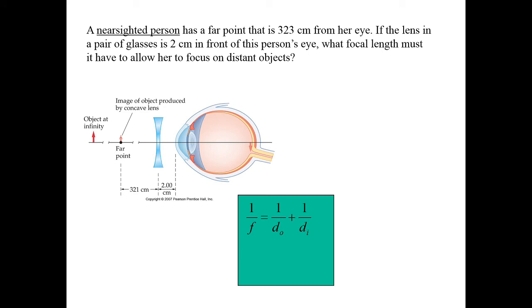Let's try an example. We have a person who is nearsighted and has a far point distance of 323 centimeters, and there are 2 centimeters between the glasses and the person's eye. We would like to correct their vision, so what should the focal length of the glasses be? We want to take an object placed at infinity and form an image at the far point. The image forms on the same side of the lens as the object, so it's a virtual image, and the image distance is negative 321 centimeters.